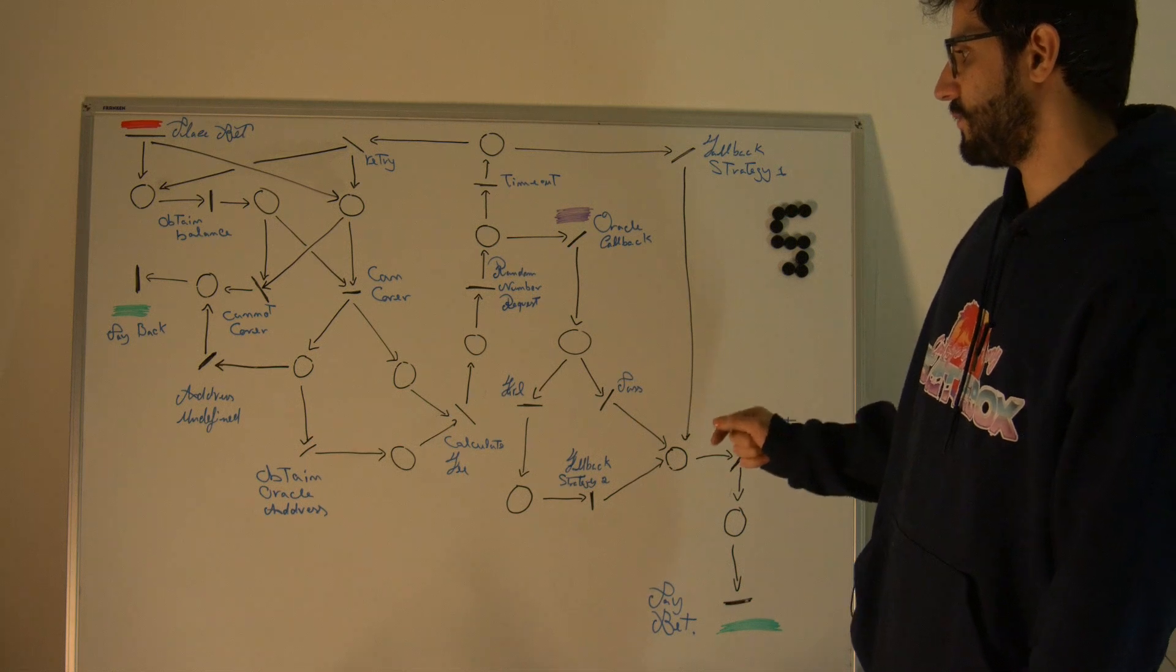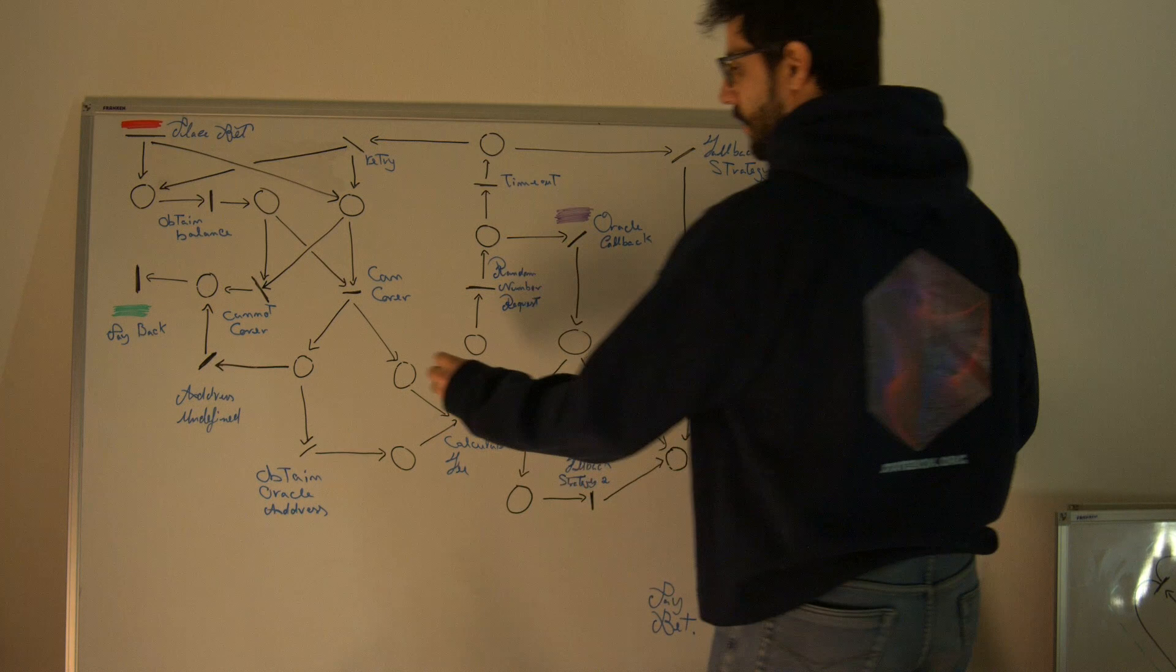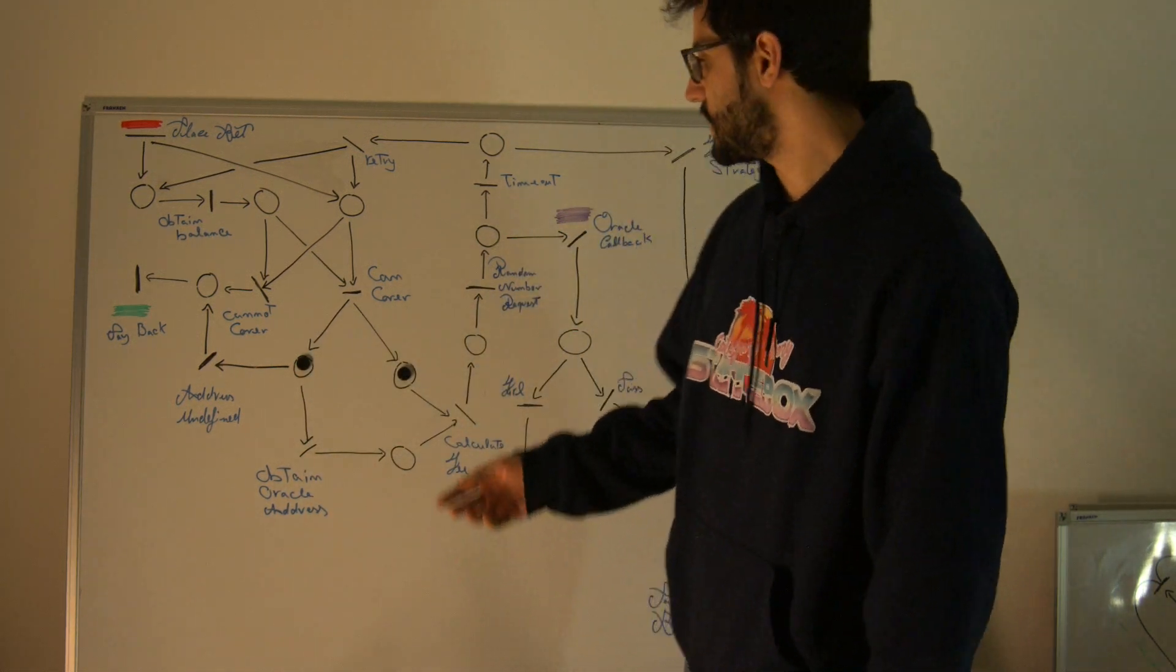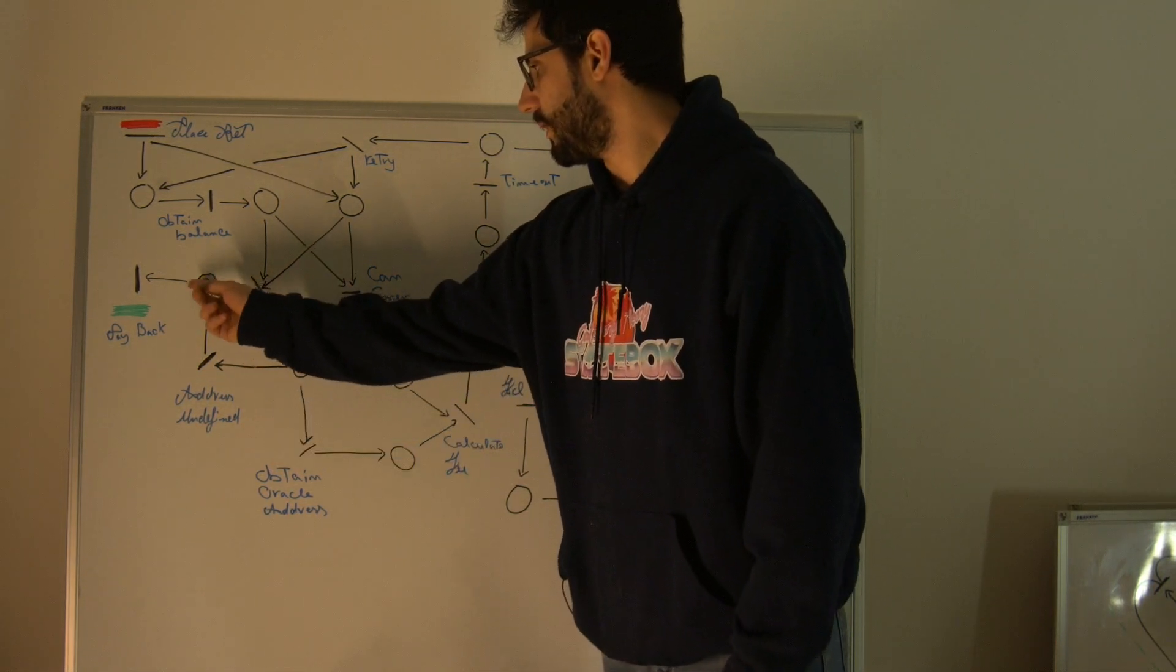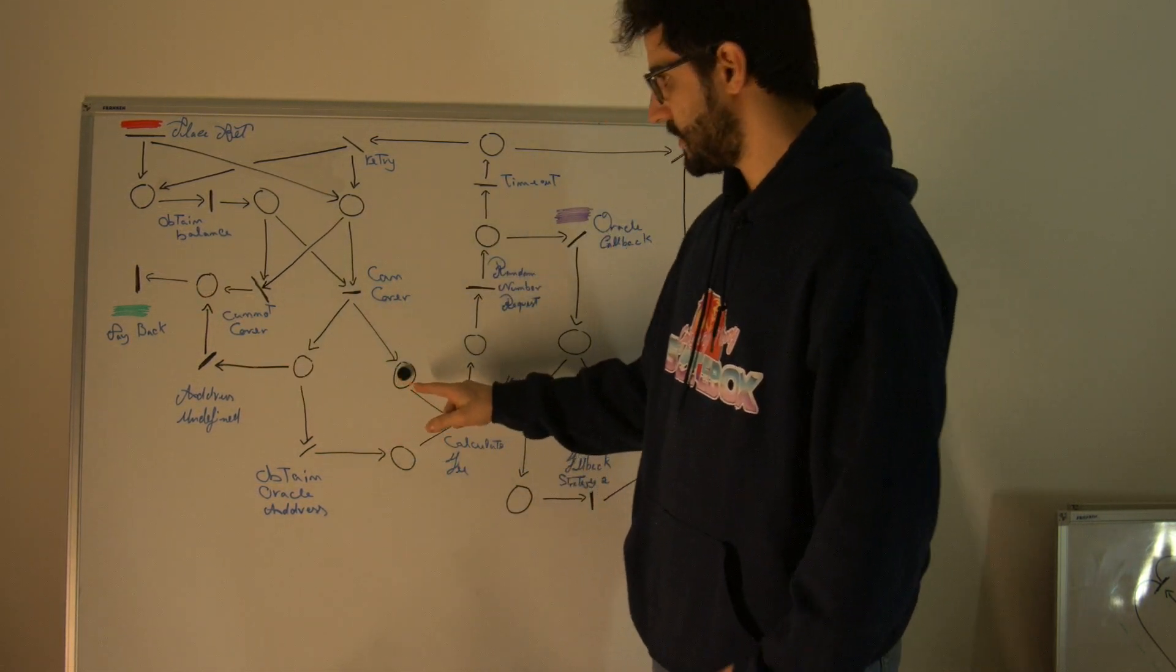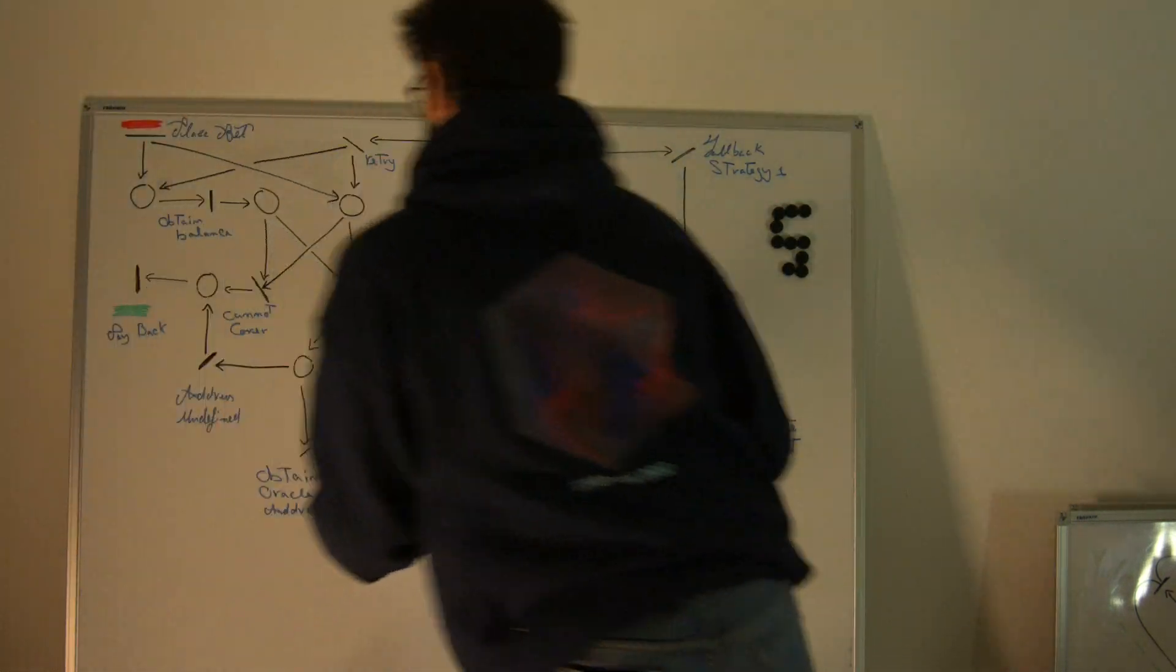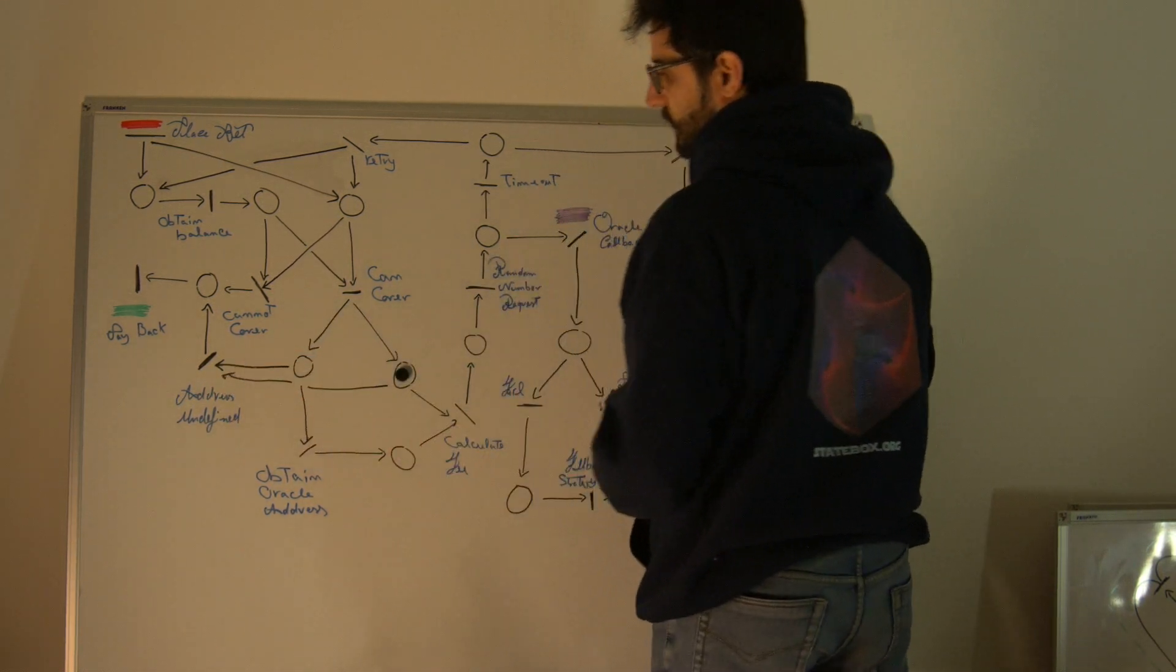Now if you look at this carefully, I intentionally put a little error in this net. When we are here and we can cover the bet, we have to obtain the Oracle address. But what if the address is undefined? I put a transition here that says undefined. So we pay the user their bet back because we can't process it. But you see that the way I implemented it is not really working because this token stays here in place. This token will stay in the net forever and we will not be able to get rid of it.